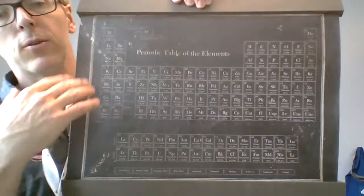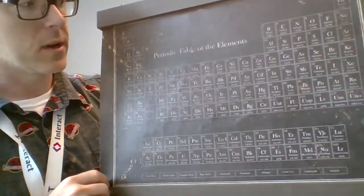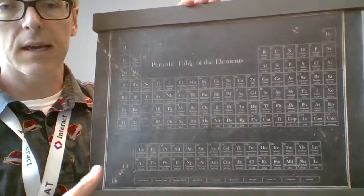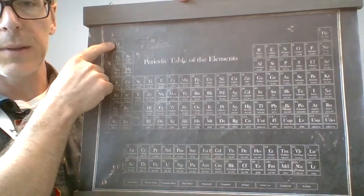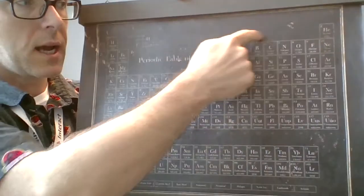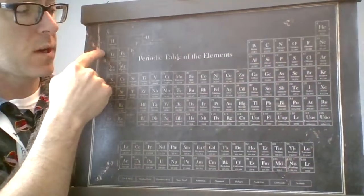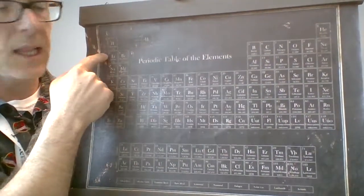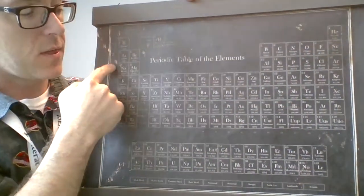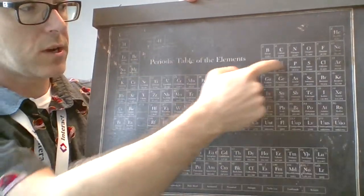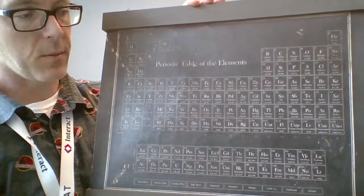To learn how to write electronic configurations you have to look at the whole periodic table. We're going to read it like a book — start in the top left, read one line at a time right across, then go to the second line and read right across, the third line read right across, and so on until we get to the bottom.